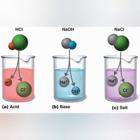Synthetic indicators are prepared in the laboratory, like methyl orange and phenolphthalein. Methyl orange in acidic solution gives red color but in basic solution it gives yellow color. In acidic solution phenolphthalein is colorless, but in basic solution it gives pink color. Phenolphthalein is generally of pink color only.